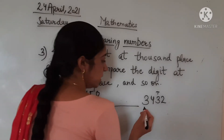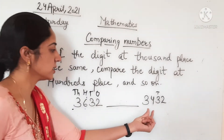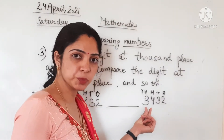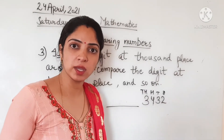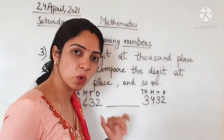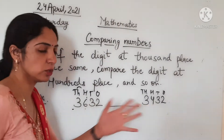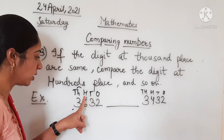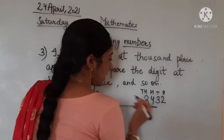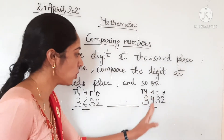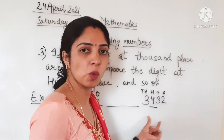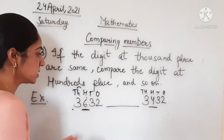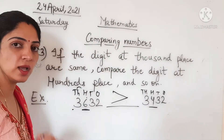For example: 3,632 and 3,432. The thousands place digit of both is 3 and 3 — they are the same, so we move to the next place. The hundreds place: 6 and 4. Since 6 is bigger than 4, this number is the greater one. So 3,632 is greater than 3,432.